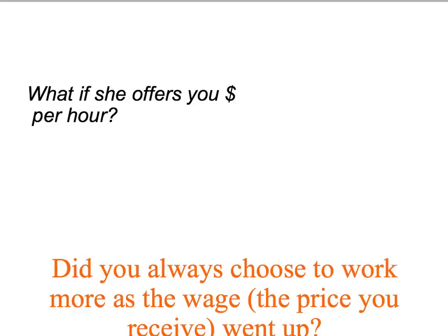So now you've got your list of choices — for each wage you have chosen how much you would like to supply. I want to ask you a simple question: did you always choose to work more as the wage went up? Or, when it got to say a million dollars an hour, did you actually start working less? If at some point you decided not to work as many hours even though the wage had gone up, then your supply curve for labour doesn't always slope up — it sometimes slopes down. If you don't believe me, draw the numbers you actually came up with. You'll see your supply curve starts to bend the wrong way.